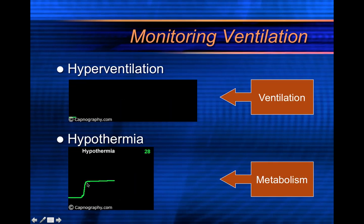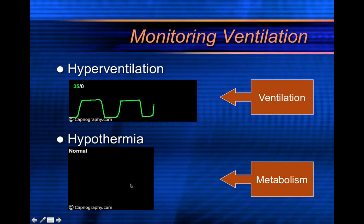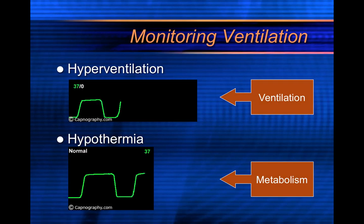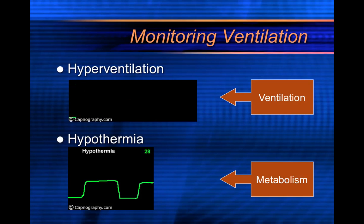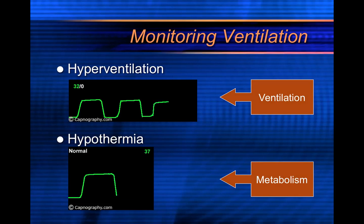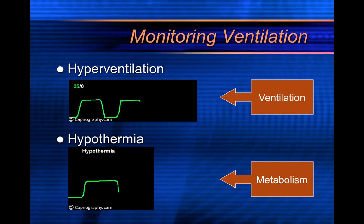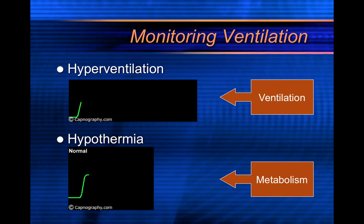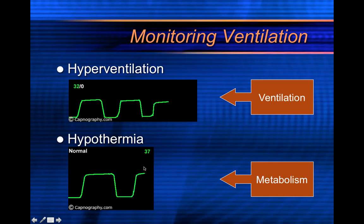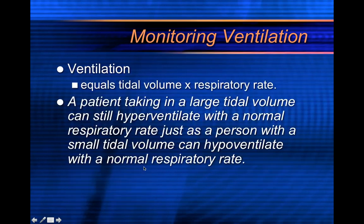Hypothermia can also produce a low end-tidal CO2 value. That's because of decreased cellular metabolism. Hypothermia slows down oxygen use, which slows down carbon dioxide production. If you decrease metabolism, you decrease CO2 produced and sent to the lungs, so your end-tidal CO2 reading will be low.